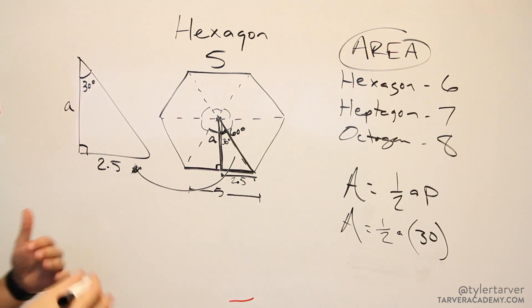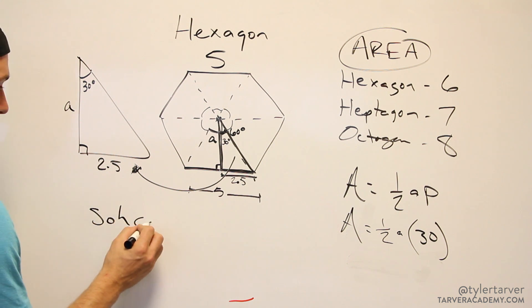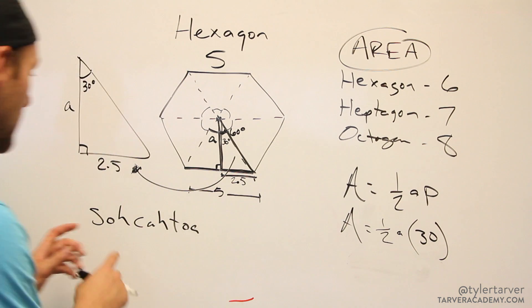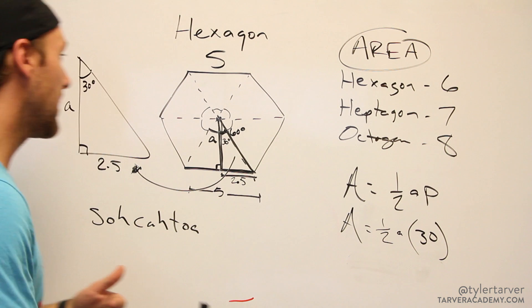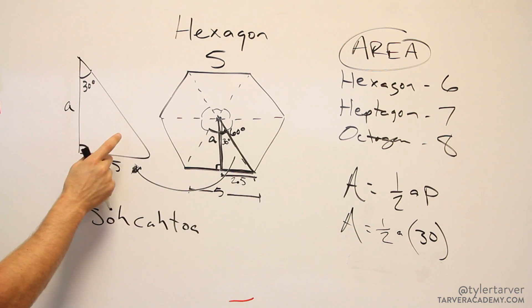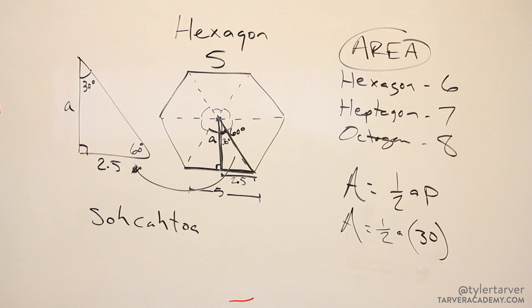Usually what we'd have to do on these things is use SOHCAHTOA, which is: sine is opposite over hypotenuse, cosine is adjacent over hypotenuse, and tangent is opposite over adjacent. Or if you need something to remember it by: Some Old Hag Caught Another Hag Tripping On Acid - don't tell anybody I said that. That's what you would use. However, this is what we call a special right triangle. That means it's either a 45-45-90 degree triangle or a 30-60-90 degree triangle, which we know: if that's 30 and that's 90, this has to be 60.